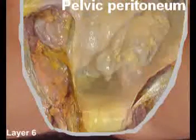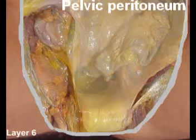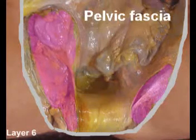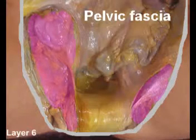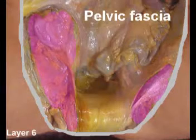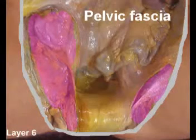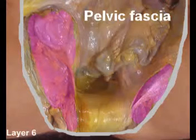The peritoneum continues its journey backwards to cover the anterior aspects of the rectum and plaster that structure to the posterior abdominal wall and the hollow of the pelvis. The endopelvic fascia, or pelvic fascia, is a condensation which surrounds the organs of the pelvis and their walls. It is covered externally by the parietal peritoneum in areas where the structures are exposed superiorly.